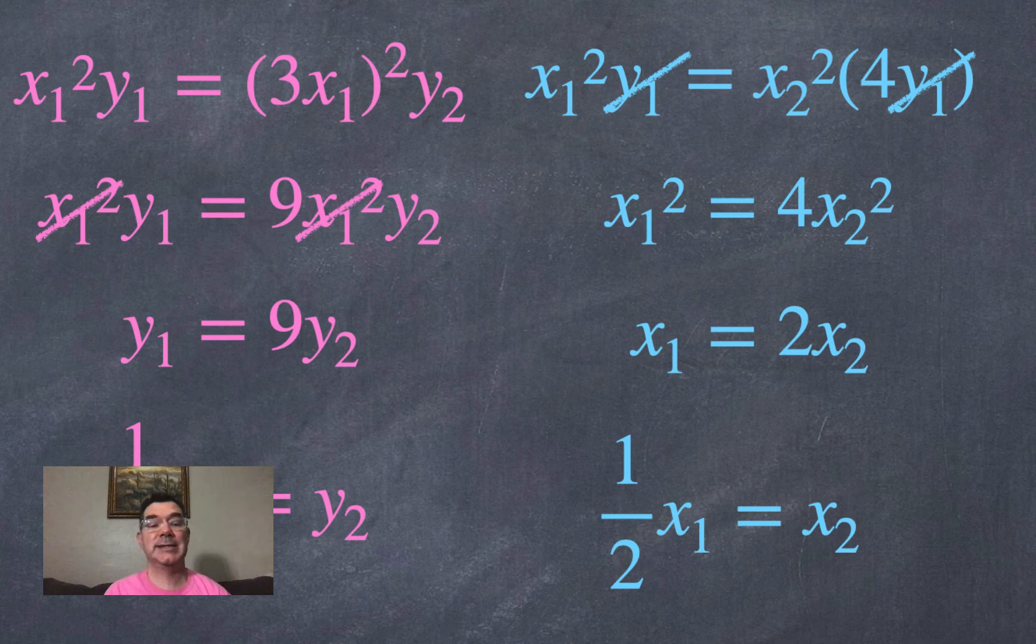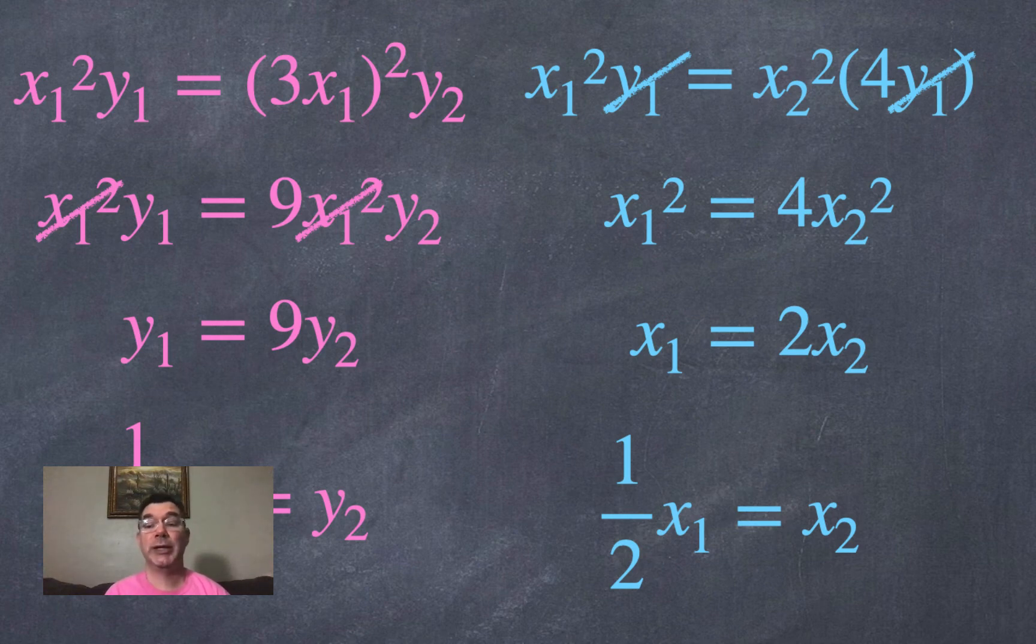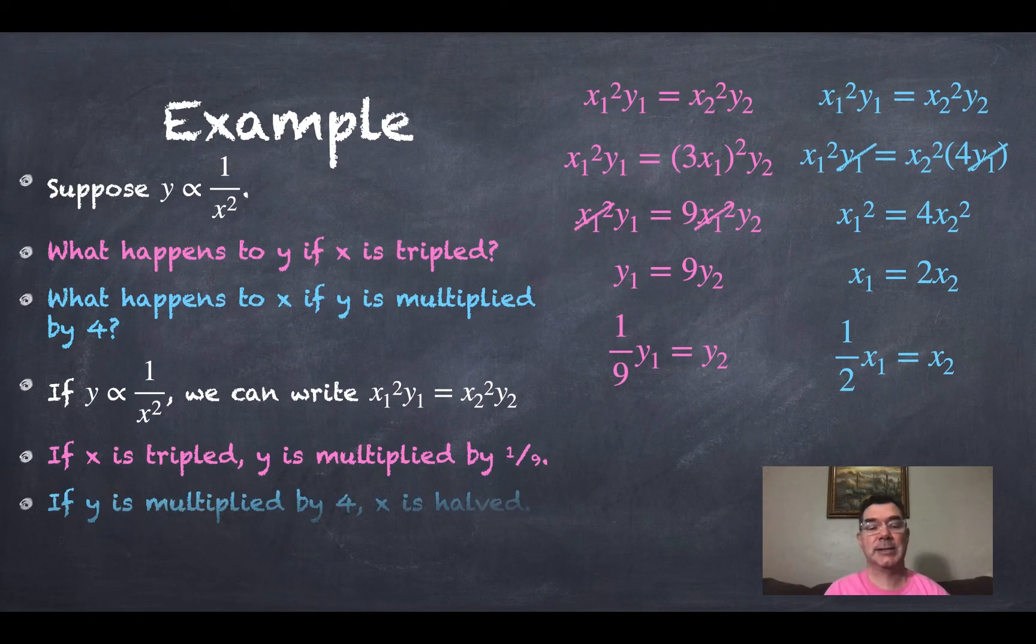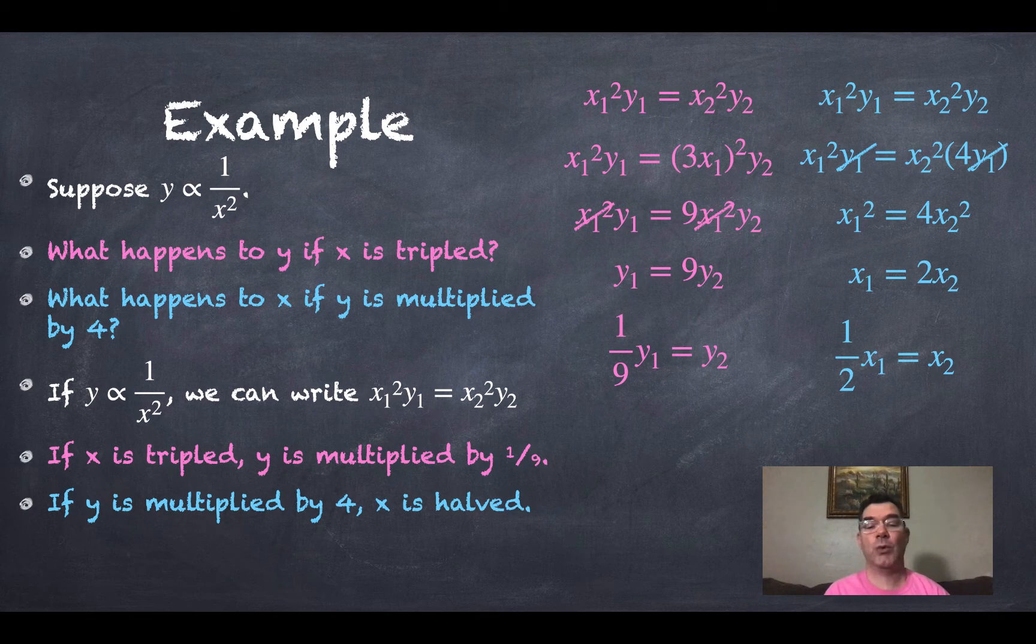So what that means is if y is multiplied by 4 to get from my first y to my second y, then to get from my first x to my second x I would have to take that first x and multiply it by a half or divide it by 2 in order to get my second x. So if y is multiplied by 4 then x is what we would call halved.